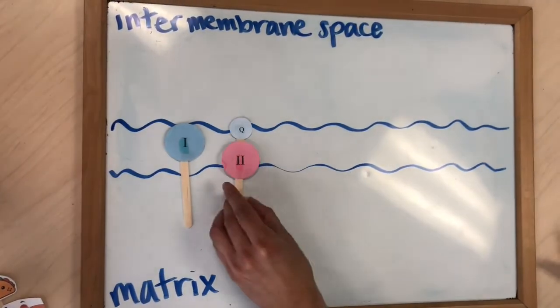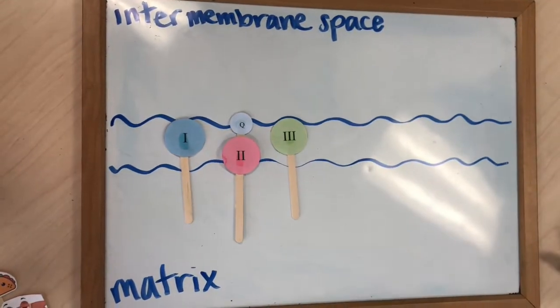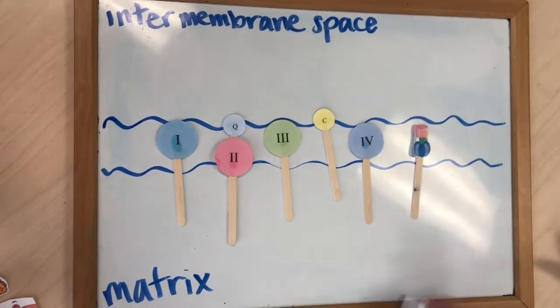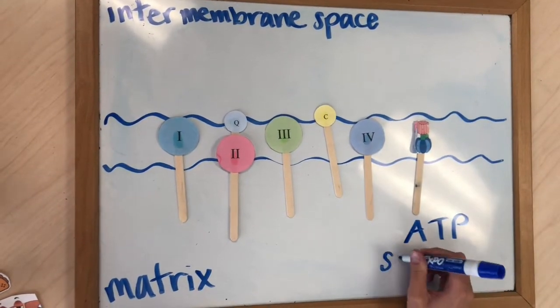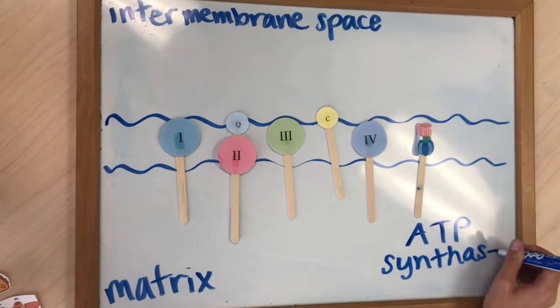Here is the electron transport chain. There are four complexes in the inner membrane of the mitochondria that take energy from electrons to pump protons across the mitochondrial inner membrane.